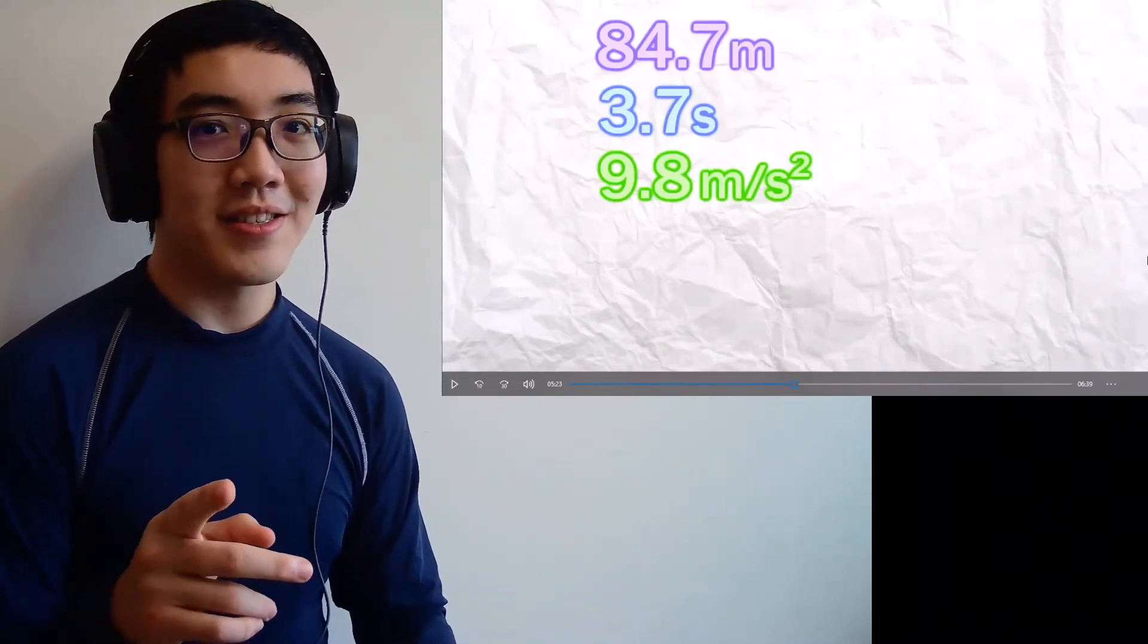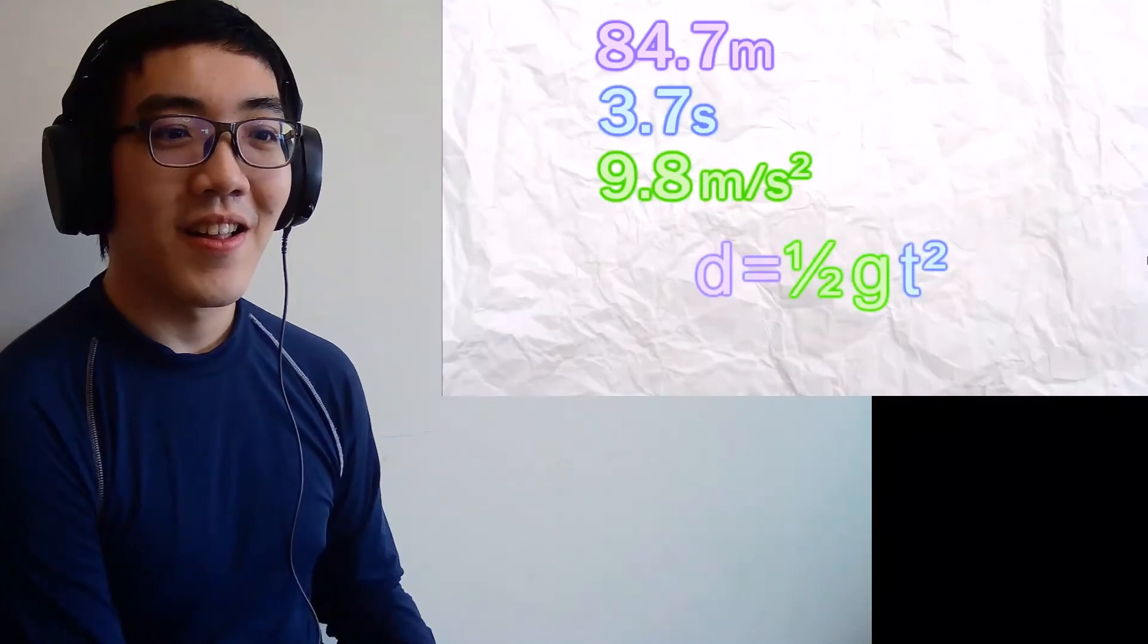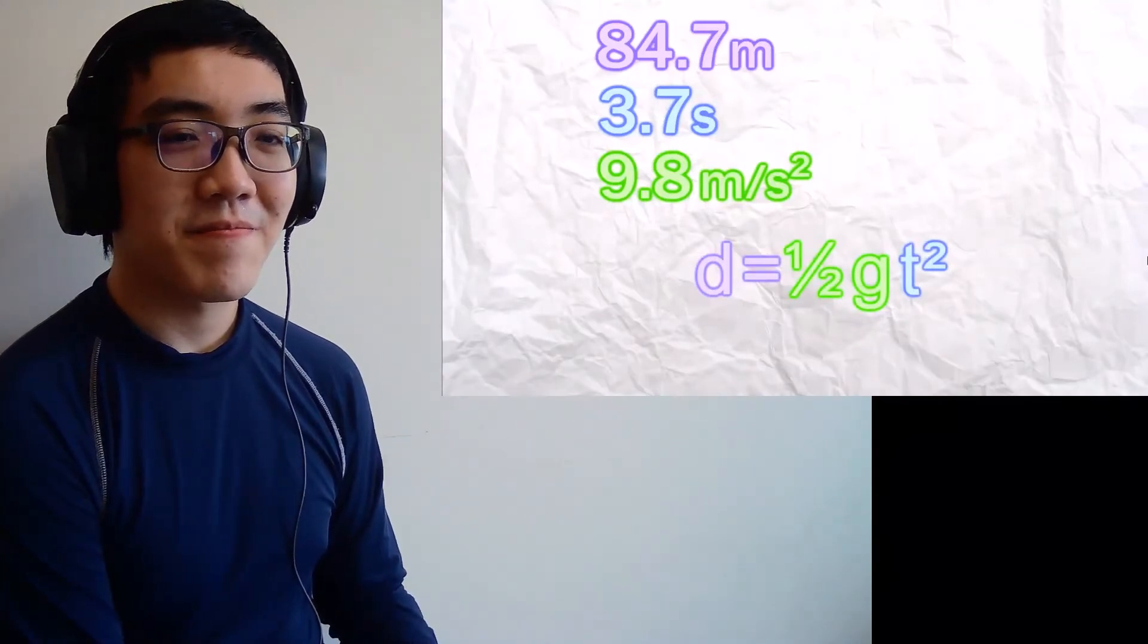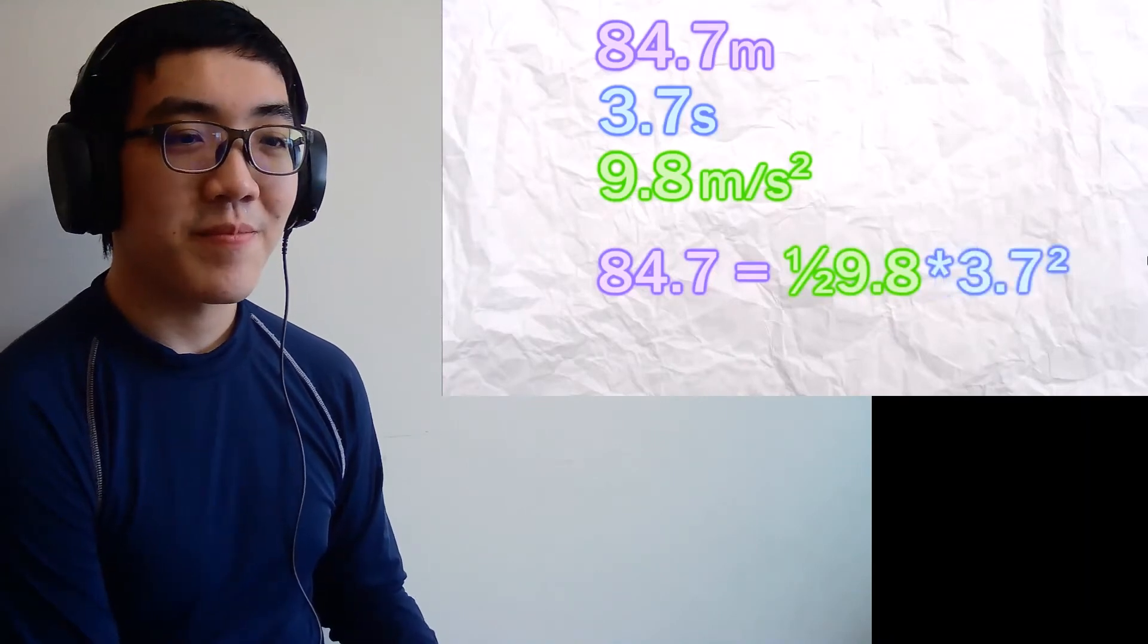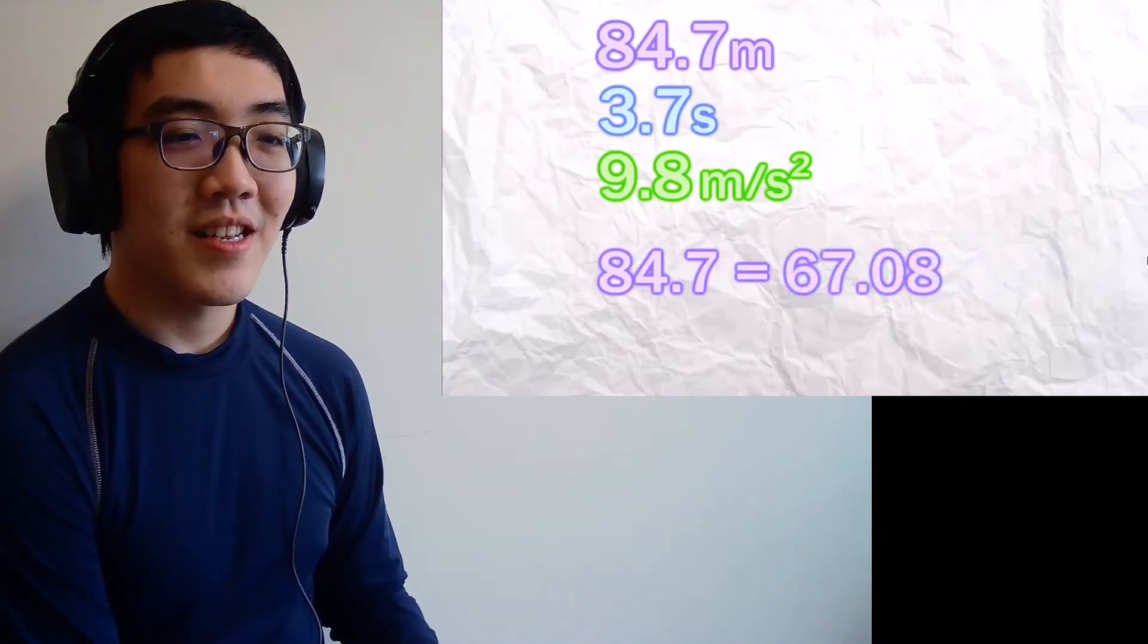With the acceleration due to gravity being 9.8 meters per second per second—no, not necessarily, because this is not the real world, it occurs in the game world. So maybe gravity is different, isn't it? You just plug these numbers into the equation to make sure everything checks out. Distance equals one-half acceleration due to gravity times time of the fall squared, and we get something that's not right.